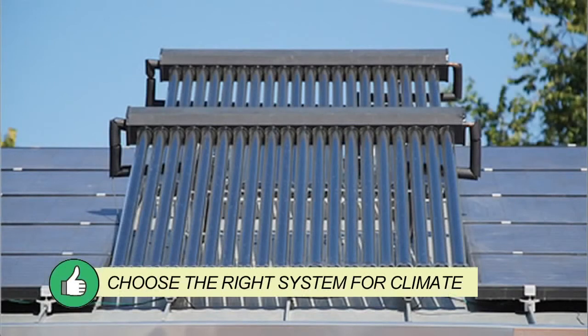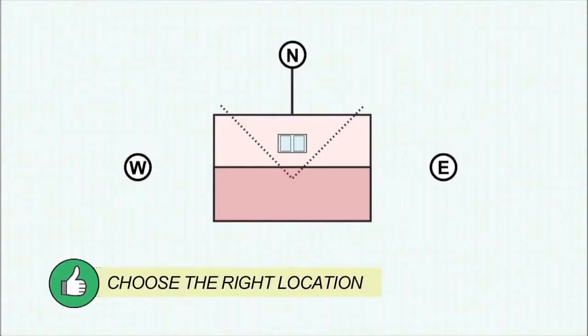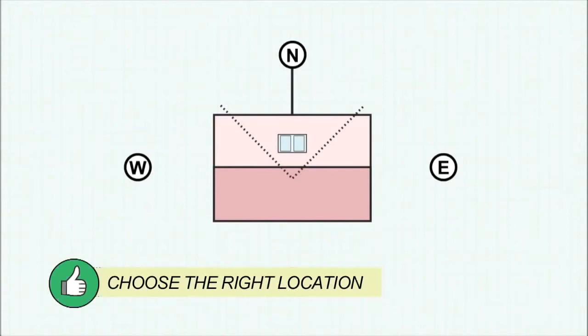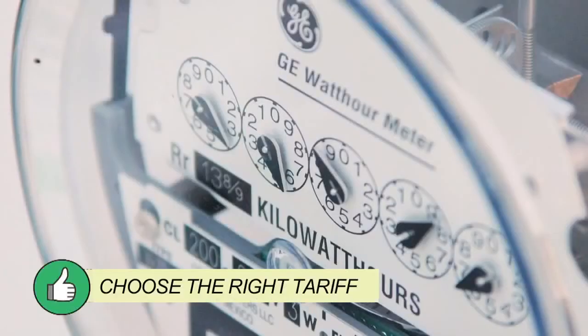So, select the system for the climate and use appropriate temperature controls. Locate the collector and tank to maximise performance. Install a manual boost switch and connect to a tariff which minimises emissions and costs.